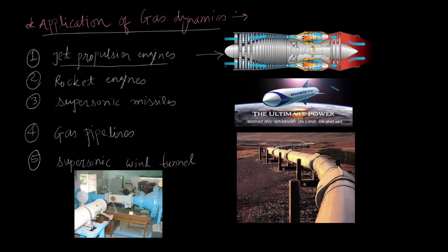And in jet propulsion engines, the air first enters into a compressor. This is a compressor. Then it goes into a combustion chamber where the fuel and air combustion happens.